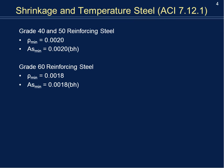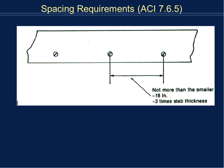What are some ACI code regulations? First, shrinkage and temperature steel: row min must be 0.002 for grade 40 or 50 steel, and 0.0018 for grade 60. All steel must meet that minimum. For spacing requirements, the center-to-center spacing of rebar must not exceed the smaller of 18 inches or three times the slab thickness.